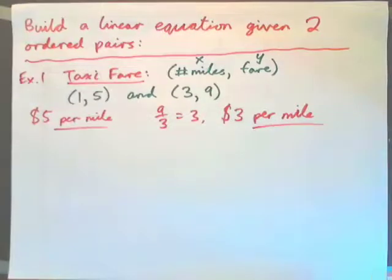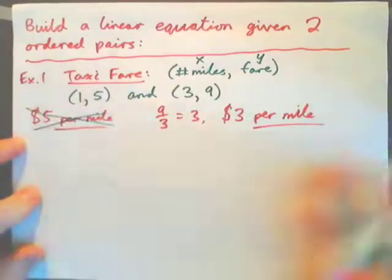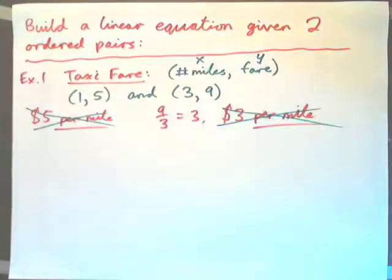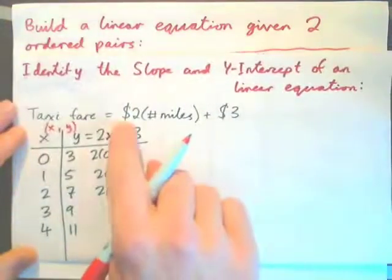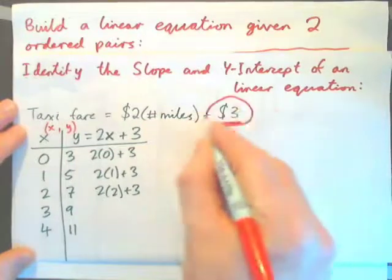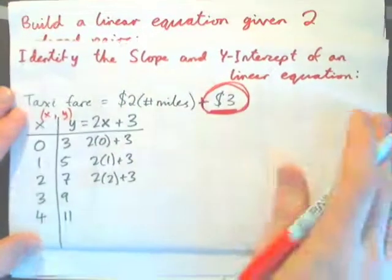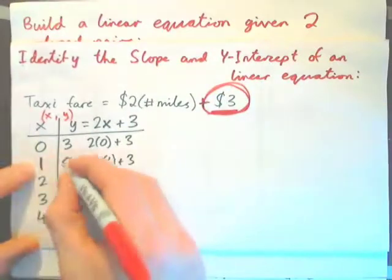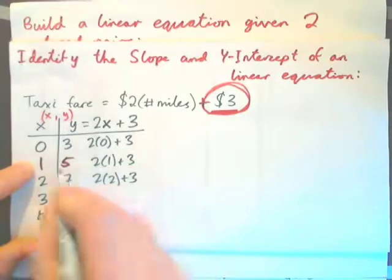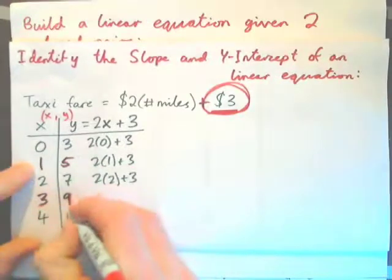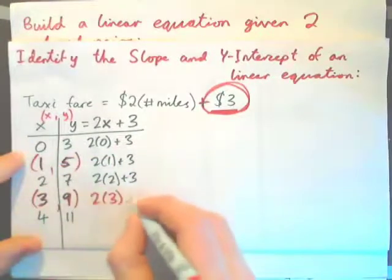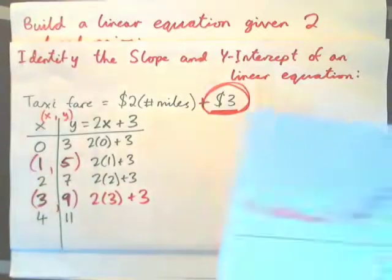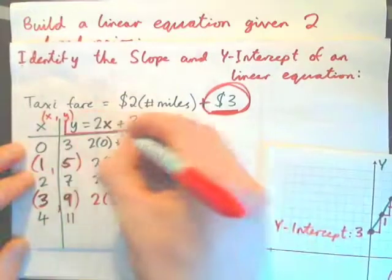Neither of these is correct. It's not five dollars per mile and it's not three dollars per mile. If you look back at the first example from the previous video, the answer is actually that the taxi fare is two dollars per mile plus a three-dollar base fee. It's this base fee that confuses us. To go one mile costs five dollars because two times one is two plus three equals five. To go three miles costs nine dollars because two times three is six plus three equals nine. Our job is to find the actual equation: y equals two x plus three.